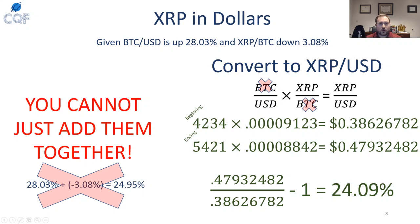What if you want to convert that Ripple return into dollars? We had a Bitcoin return of about 28% and a Ripple loss of 3%. You can't just add them together — 28 plus negative 3 does not equal 24.95. That is wrong. You have to convert your XRP into dollars using what's called a cross product. You take BTC over USD times XRP over Bitcoin — that's Ripple in Satoshis — and multiplying those two out gives you XRP over dollars, because you can cancel the two Bitcoin terms.